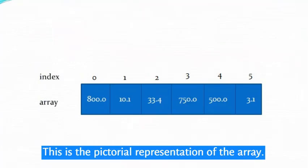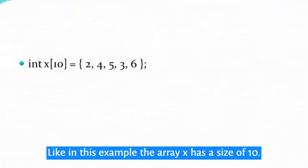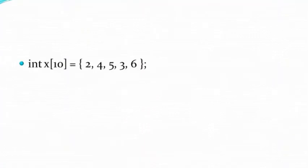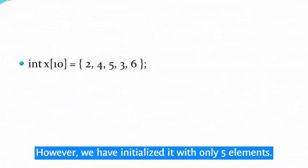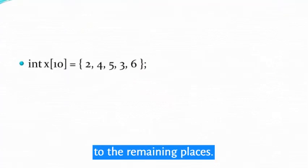This is the pictorial representation of the array. If an array has a size n but we store less than n number of elements, like in this example the array x has a size of 10, however, we have initialized it with only 5 elements. In such cases, the compiler assigns random values to the remaining places.